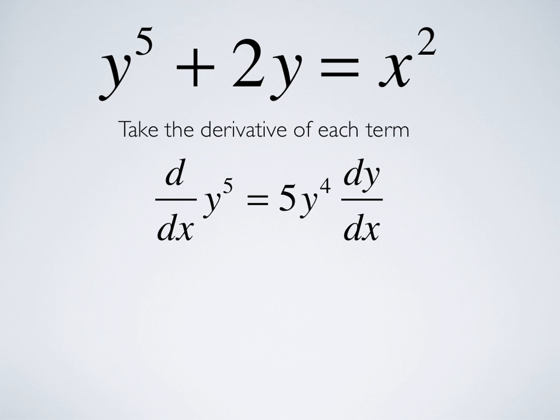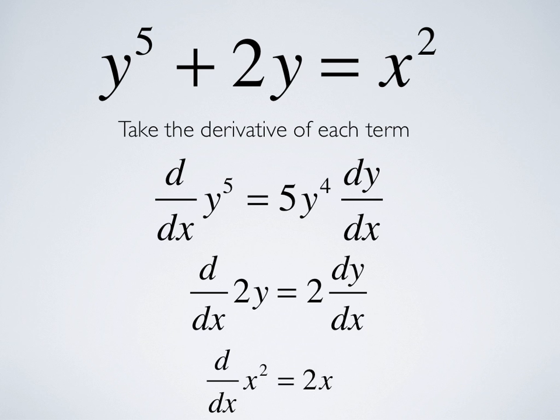So, now taking the derivative of the second term, d dx of 2y is 2 times dy dx. Now, on the other side, we have x squared. That's an explicit function of x. So, we just take the derivative in the usual fashion, and we're going to get 2x.